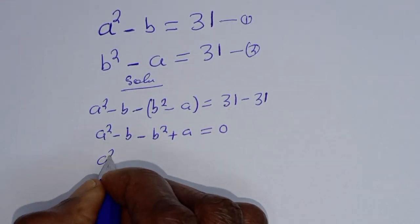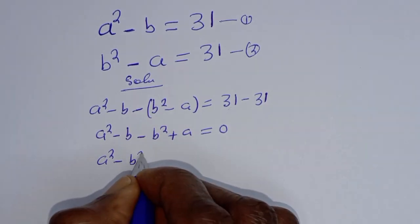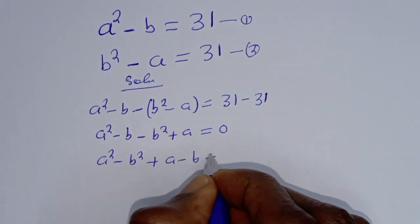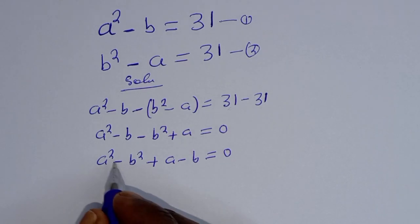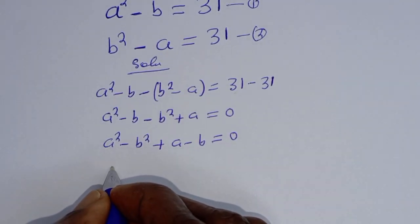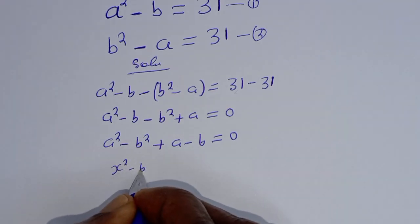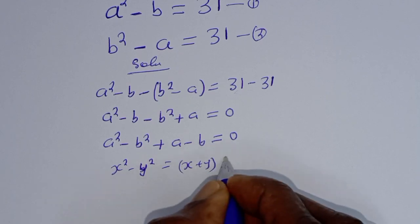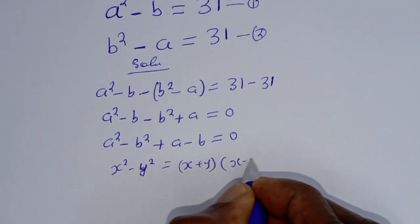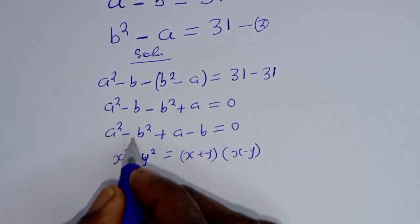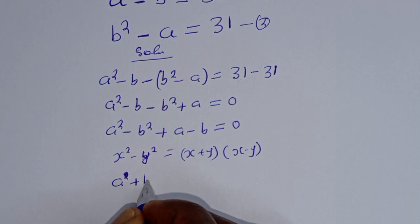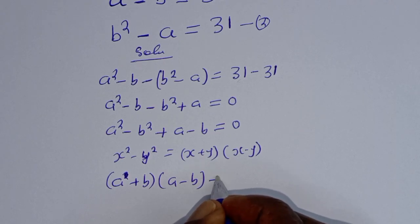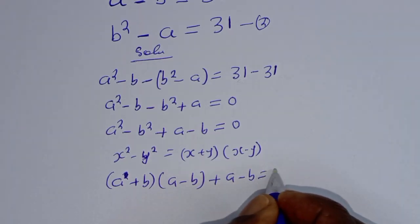Rearranging: A squared minus B squared plus A minus B is equal to 0. This is in the form of a difference of squares, where X squared minus Y squared equals (X plus Y)(X minus Y). So this can be written as (A plus B)(A minus B) plus (A minus B) equals 0.